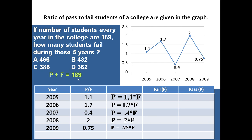Using the equation p plus f equals 189 and p equals 1.1f for 2005, substituting gives the value of f. For 2005: fail students equal 90 and pass students equal 99. For 2006, using p equals 1.7f and p plus f equals 189, fail students equal 70 and pass students equal 119.